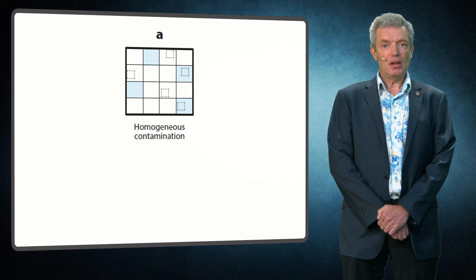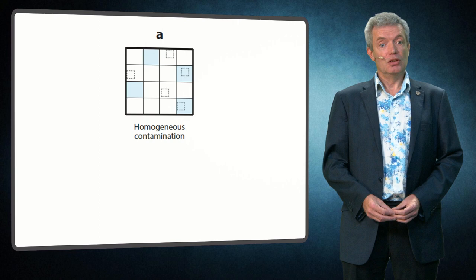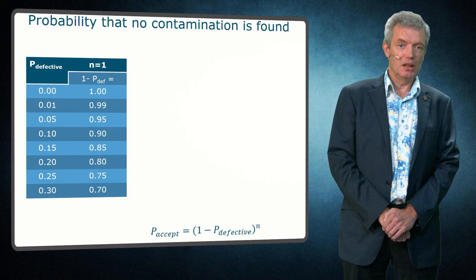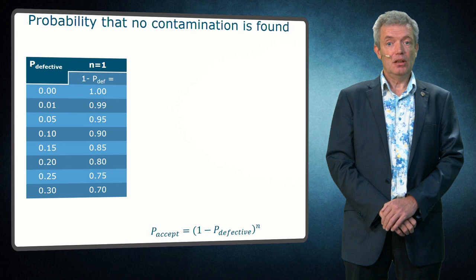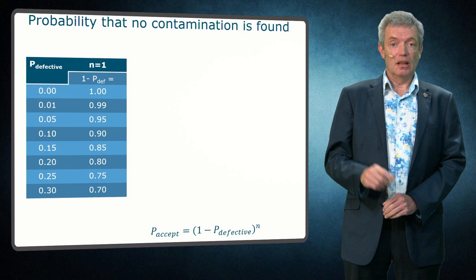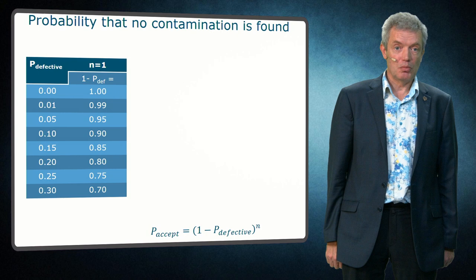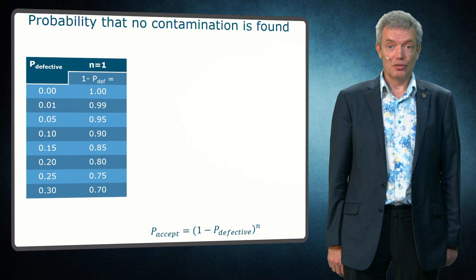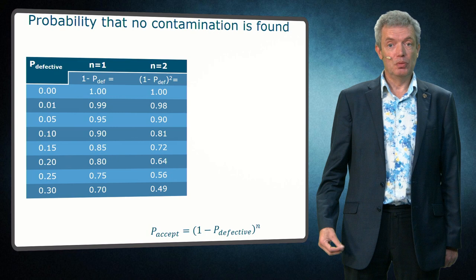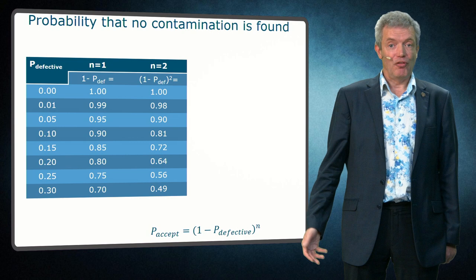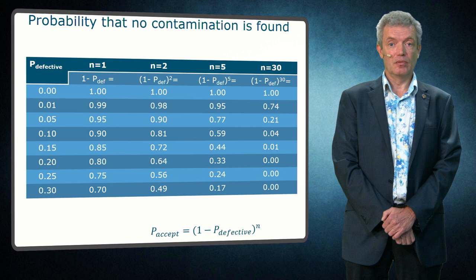If we have a homogeneous contamination resulting from an ideally mixed product like a liquid, the organism will be randomly spread and we can look at what the performance of a sampling plan will be. On the left side you see the prevalence of the organism in a sample — the probability to have a defective sample. In the next column you see the probability to accept the batch if you take only one sample. The probability that no contamination is found equals 1 minus p-defective. So if a sample has a 5 percent probability to contain the organism, I have a 95 percent probability to not find the organism in one sample. To improve performance we take more samples: for 2 samples we put (1 minus p-def) to the power 2, for 5 samples to the power 5, and for 30 samples to the power 30.